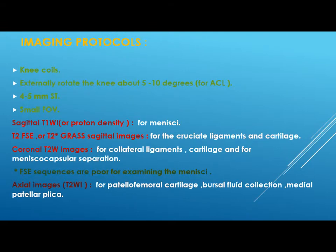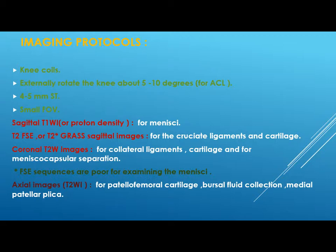We should first start with the imaging protocols, but first focus on a few techniques. You should use new coils and externally rotate the knee about 5 to 10 degrees to bring the anterior cruciate ligament to the plane of imaging. The slice thickness should be about 4 to 5 millimeters with a small field of view.